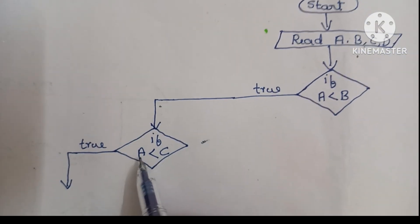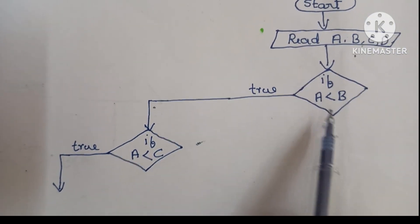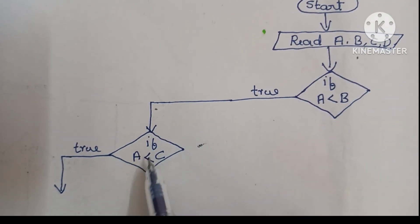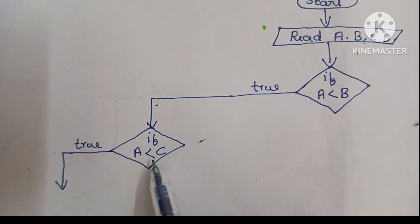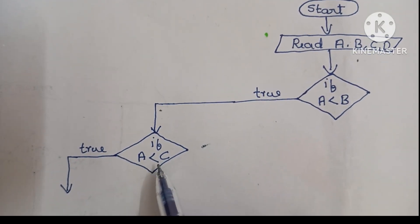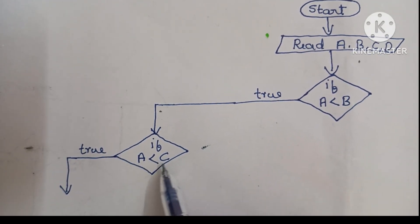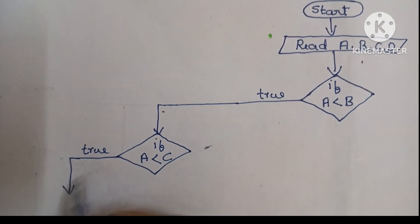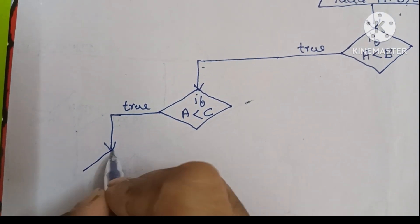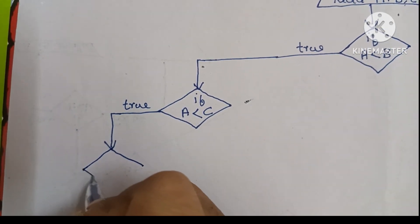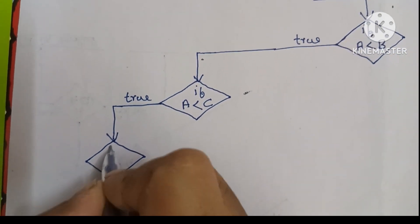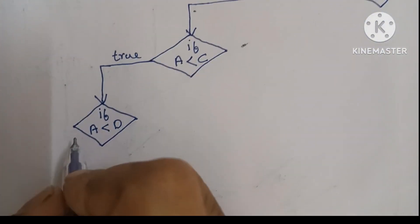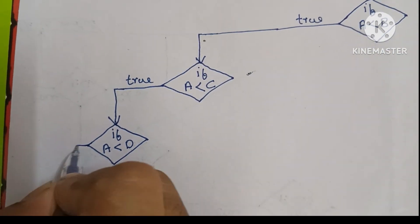If A is smallest so far — that is, A less than B is true — we compare A with C. If A less than C is also true, next we have to compare A with D.